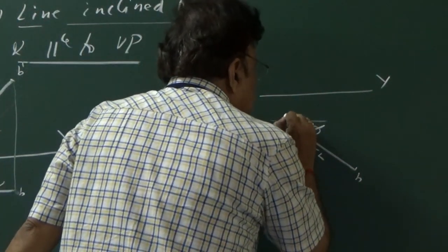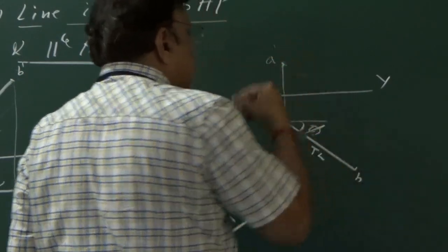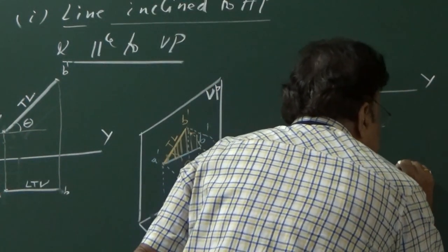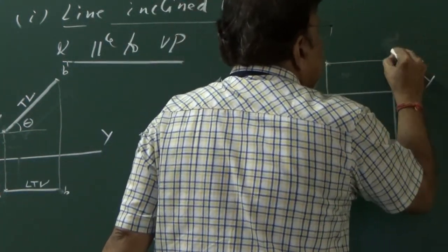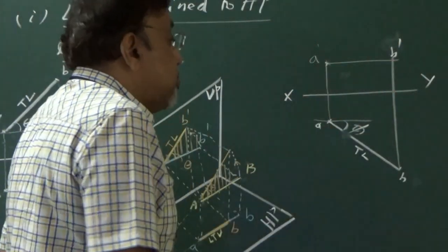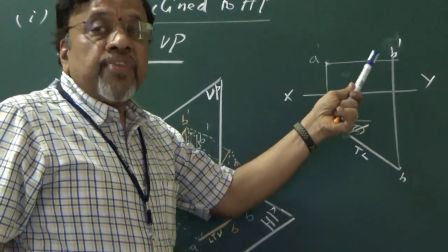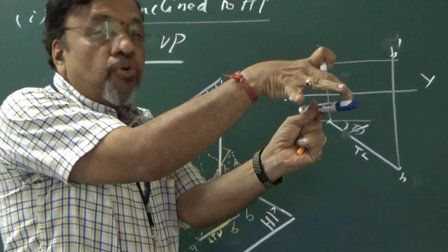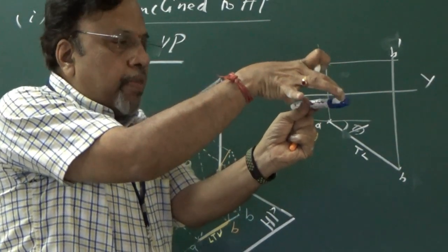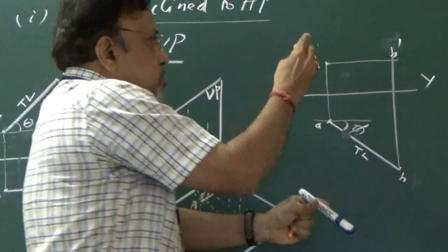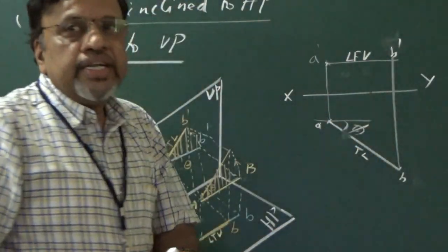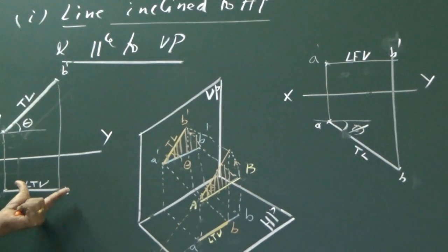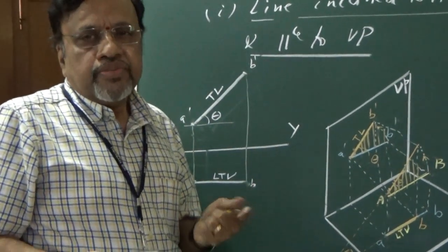Similarly, I draw the corresponding front view. For the front view, A and A dash lie on the same projector. I know the position of A in the front view — that is, I know how many mm it is above HP. So I get A dash. Then by simply projecting, I get B dash. Now A dash B dash is foreshortened. Why? Because the line is inclined to VP. Since the line is inclined to VP, looking from the front this line appears foreshortened. This foreshortened length is known as the apparent length in the front view — we call it L of V, the length of the front view. Whenever you see L of V, remember it means the line is inclined to VP.